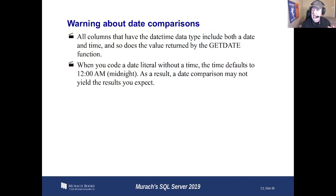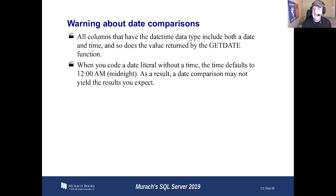One thing I wanted to remind you of from last time: whenever you use get date, get date returns a date and a time, and it defaults to 12 midnight. A lot of times this doesn't bother you because you'll create a date time field, but you always just put a date in it, so it's going to default to midnight.